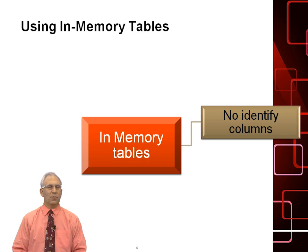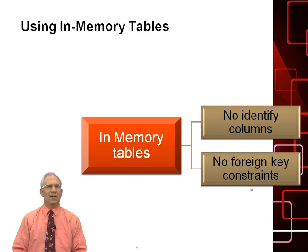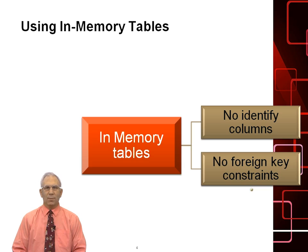A couple of rules to remember with an in-memory table: you cannot have an identity column and you cannot have any foreign key constraints. So an in-memory table can have a primary key, but it cannot have an identity column and it cannot be related to any other table.